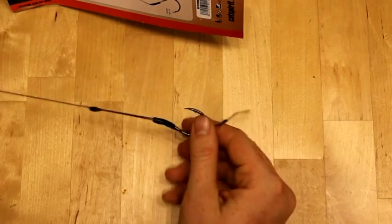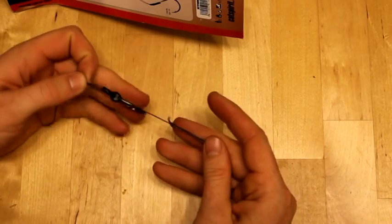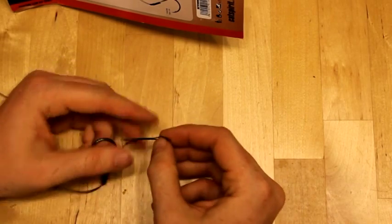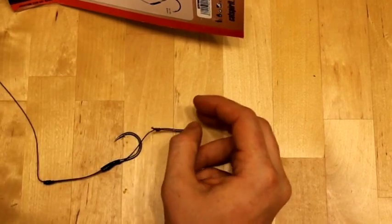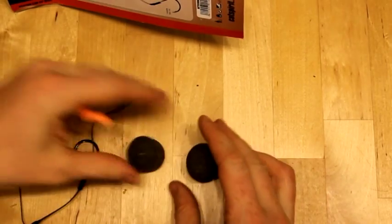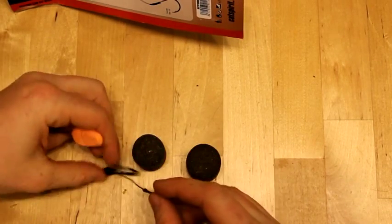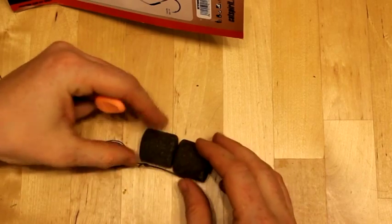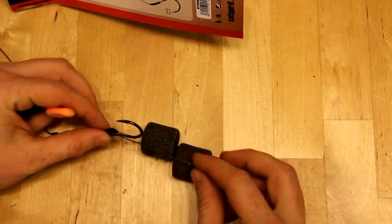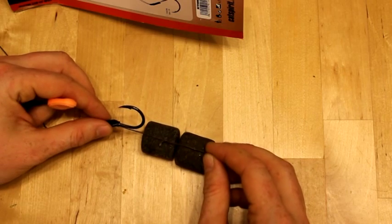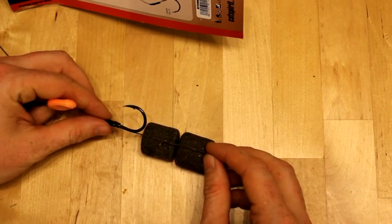And you can see here you've got the big loop on the end for attaching industrial size boilies or industrial size pellet baits like these 30 millimeter marine halibut pellets. You've got enough room to fit two of these bad boys on here comfortably.